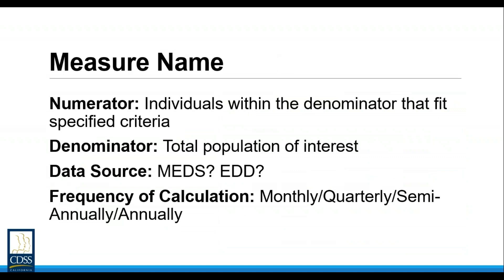For today's presentation we'll follow the same structure for each measure — we'll begin by looking at some basic information: the numerator, the denominator, the data source, and frequency of calculation. Then we'll look at an example measure visualization similar to what counties received in the first CalWORKs measure transmittal in July. The denominator is the total population we're looking at, and the numerator is the people in the denominator that satisfy a certain condition. For someone to be included in the numerator, they must first be in the denominator.